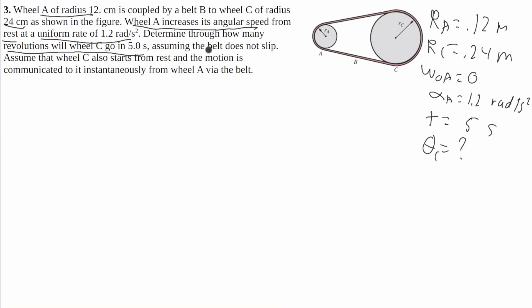It tells us that this belt does not slip, and this gives us a key piece of information. It basically says that the speed that this belt is at on the edge of wheel A will be the same as the speed on the edge of wheel C. So the linear velocity of A will be equal to the linear velocity of C, because this belt is going to be moving at the same velocity no matter which wheel it's across.